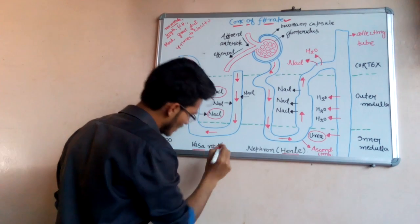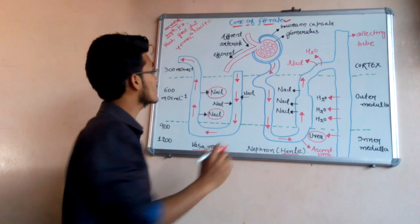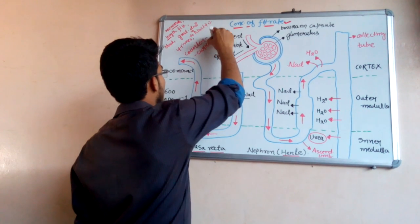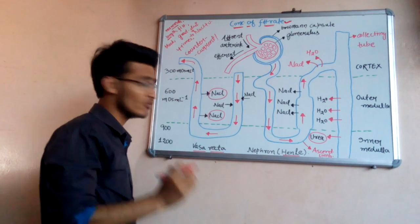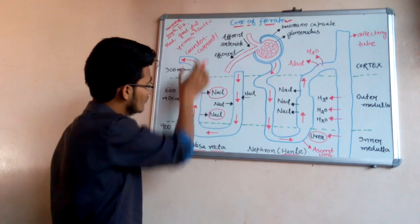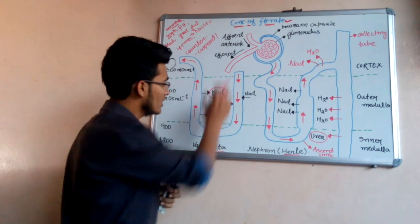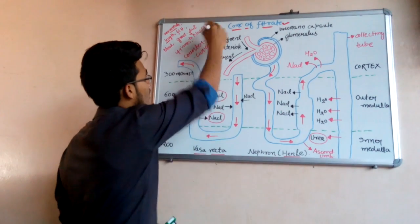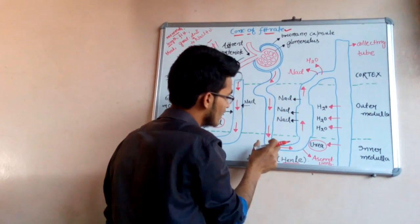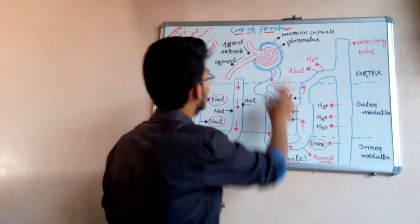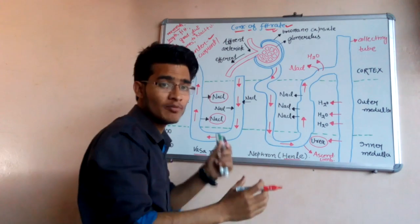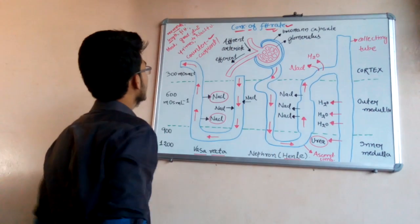This mechanism of concentration of filtrate is known as the counter-current mechanism. It is called counter-current because the blood flowing in the vasa recta has two limbs: the descending limb, in which blood flows downward, and the ascending limb, in which it flows upward. The direction of blood flow in both limbs is opposite. Similarly, in the loop of Henle, the ascending and descending limbs have opposite directions of filtrate movement — hence it is called the counter-current mechanism.